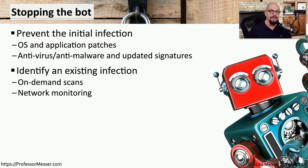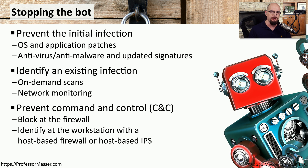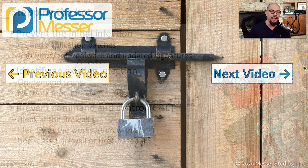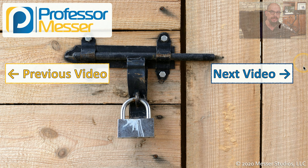You can often identify an active infection by running an on-demand anti-malware scan and watching the network for any unusual traffic patterns. If you know the type of network flows used for the command and control, you can block that at the firewall or with an IPS or firewall at the workstation level.